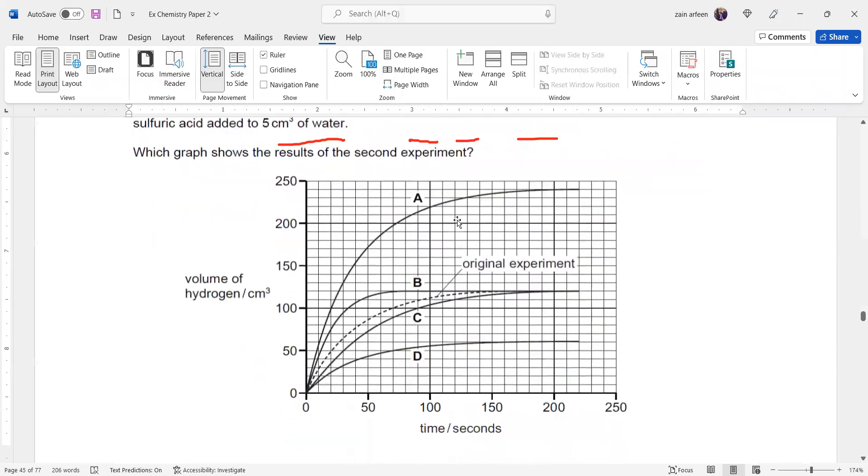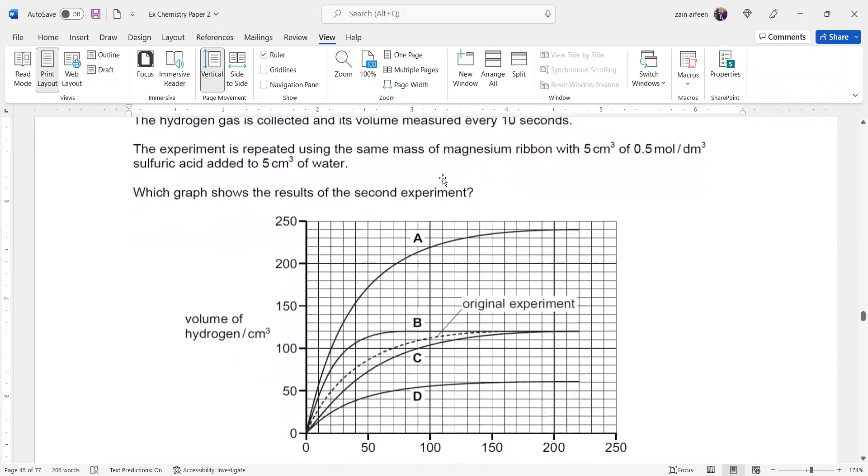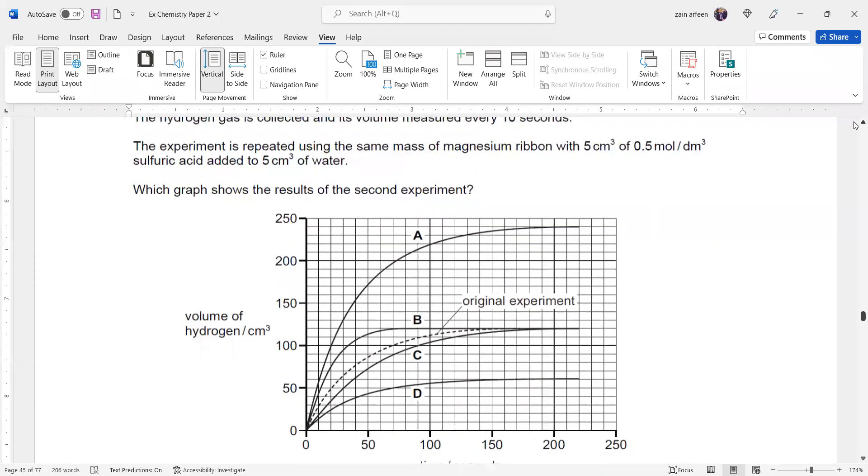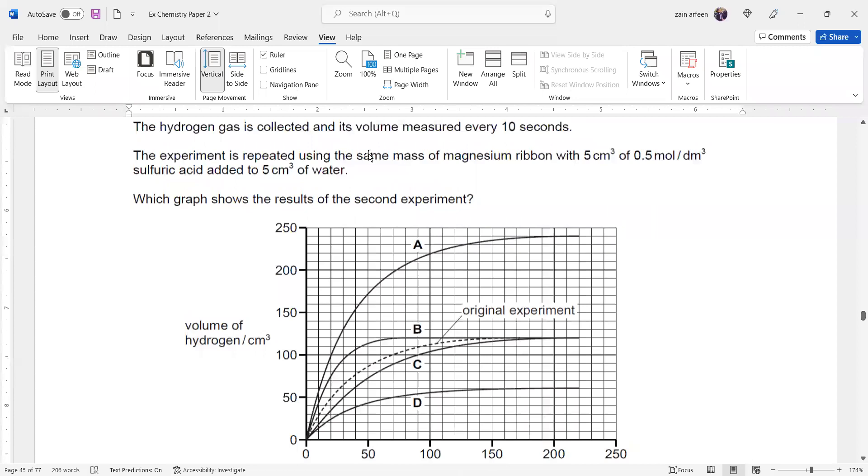Now what happened? The experiment was repeated. Student repeated the experiment with the same mass of magnesium, but now he used a small amount of sulfuric acid, not hydrochloric acid.